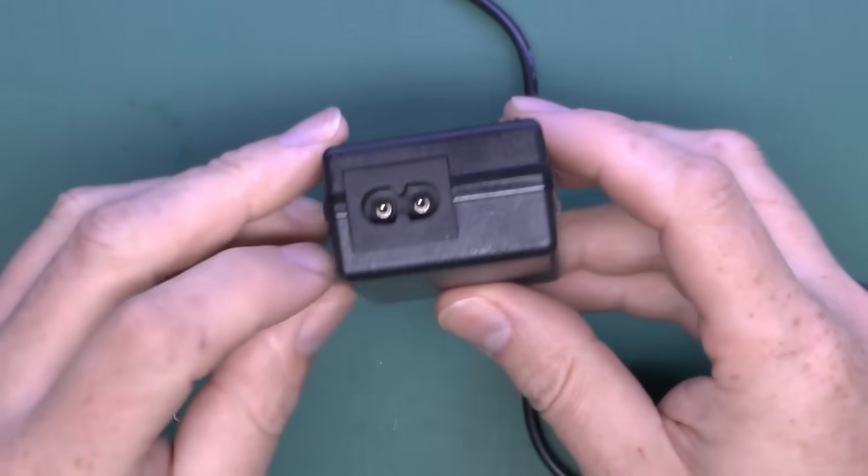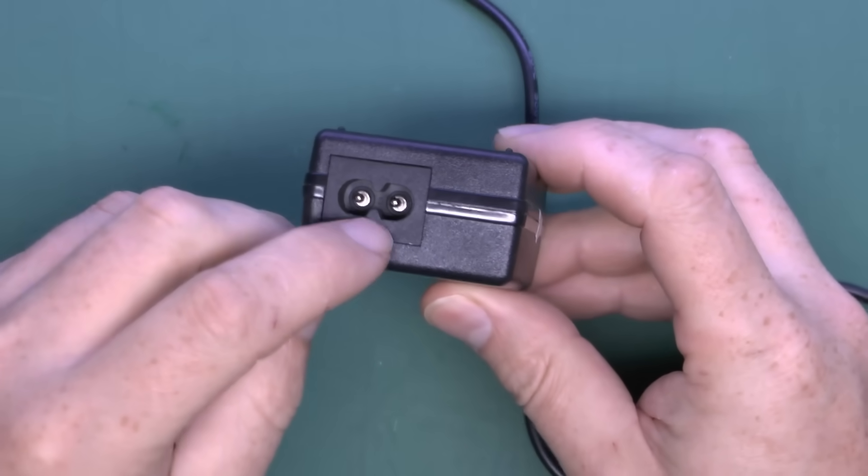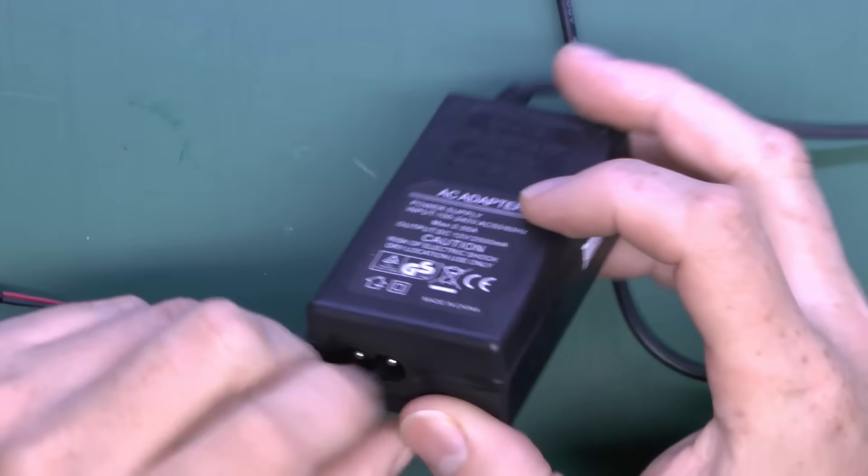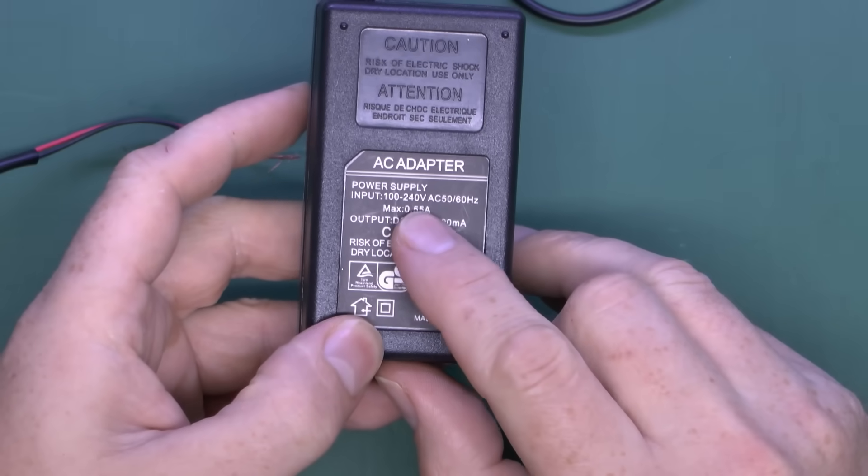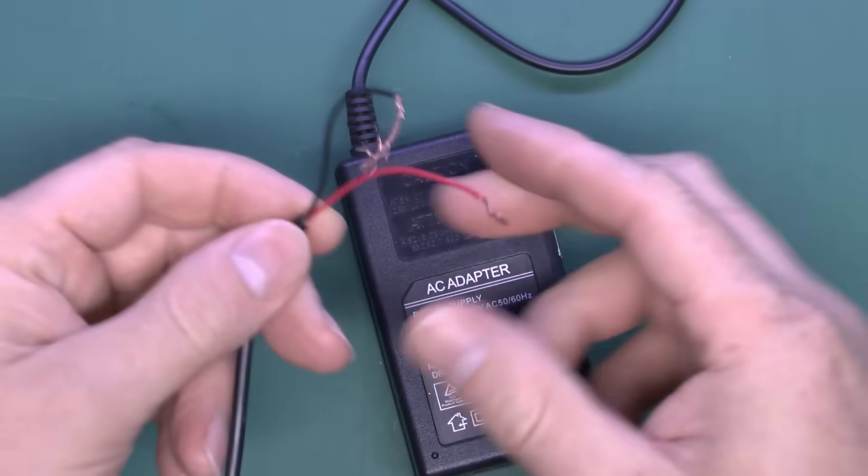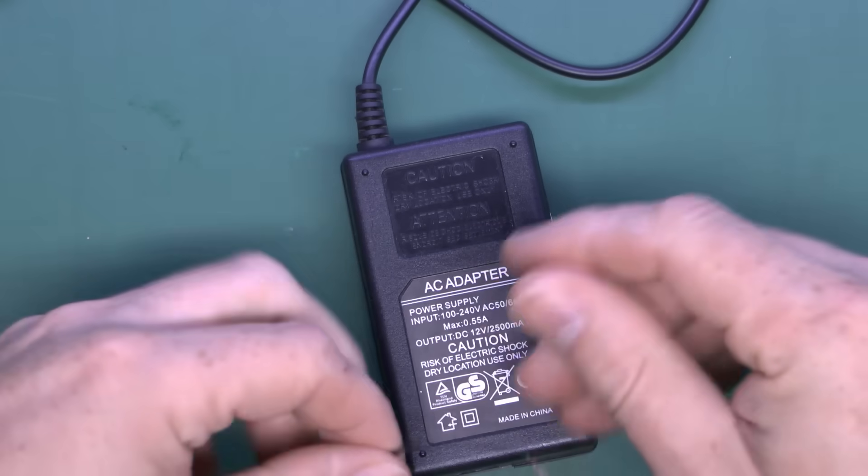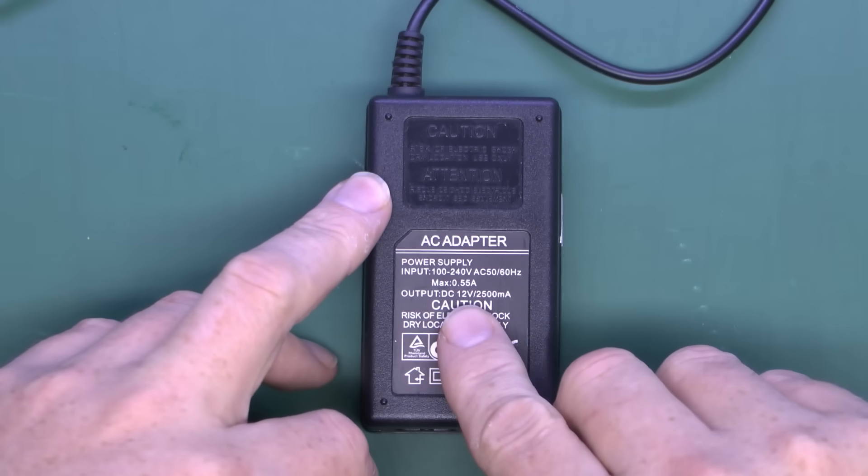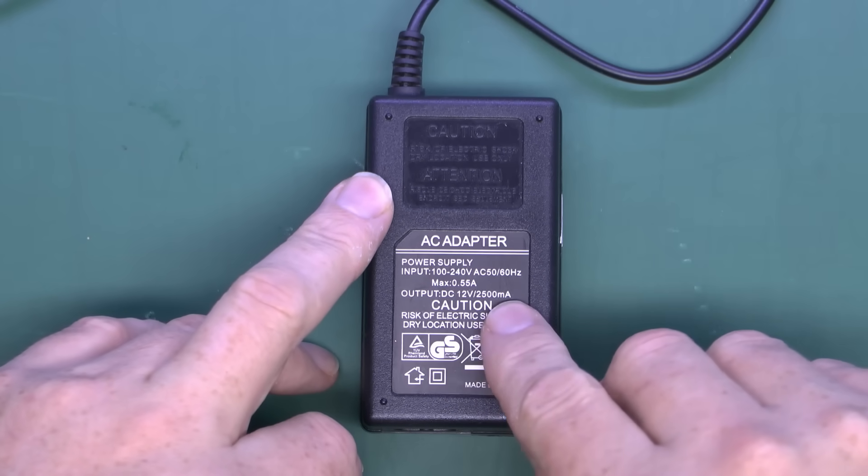Now here's the supply. It's just got one of those figure of eight type connections on the end. That's your main input, 100 to 240V, 50 or 60Hz, one of those universal type things. We're supposed to get 12V DC here, 12V up to 2.5A.